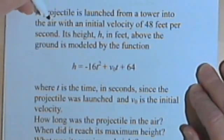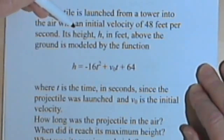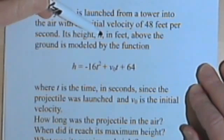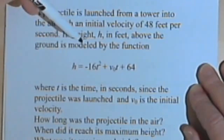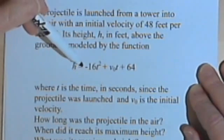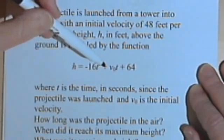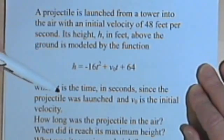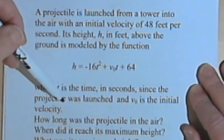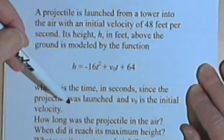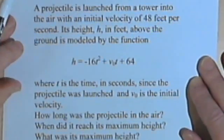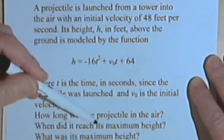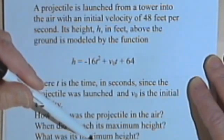A projectile is launched from a tower into the air with an initial velocity of 48 feet per second. Its height, h, in feet, above the ground, is modeled by the function h equals negative 16t squared, plus v sub o t, plus 64, where t is the time in seconds since the projectile was launched, and v sub o is the initial velocity. And then it asks us three questions. How long was the projectile in the air? When did it reach its maximum height? What was its maximum height?